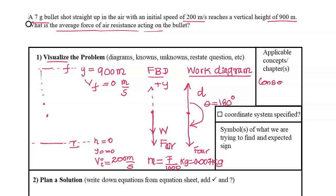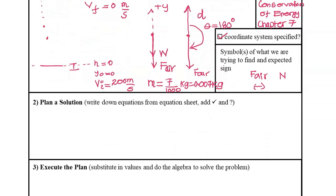We've visualized the problem. The applicable concept here is conservation of energy — this is Chapter 7 in your textbook. The coordinate system is specified with up as positive, and we are trying to calculate the average force of air resistance. The unit is Newtons and we expect a negative sign based on our coordinate system. Let's plan the solution by writing down the conservation of energy equation.